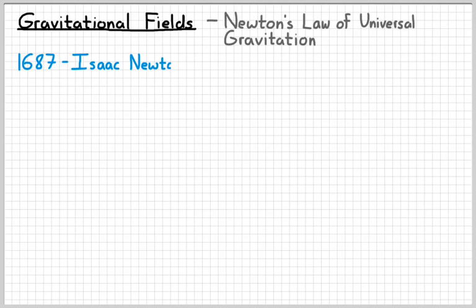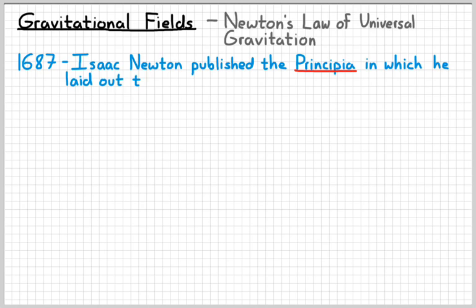So, the year is 1687, and this guy by the name of Isaac Newton, who was in his 20s, I believe, at the time, published a book that today is referred to as the Principia, in which he laid out the laws of motion that we've learned and his idea of universal gravitation.